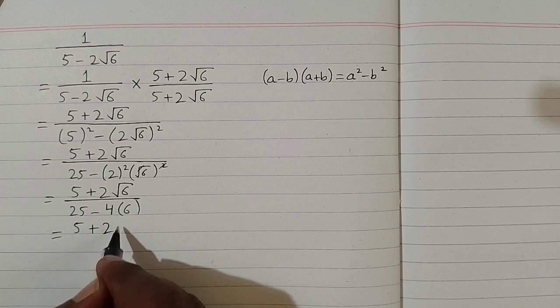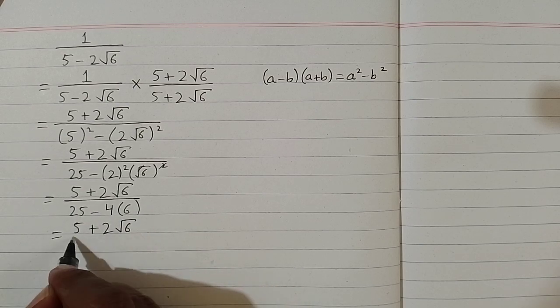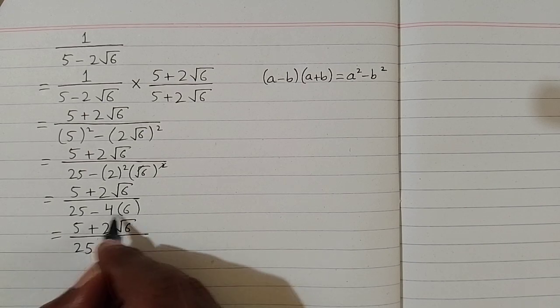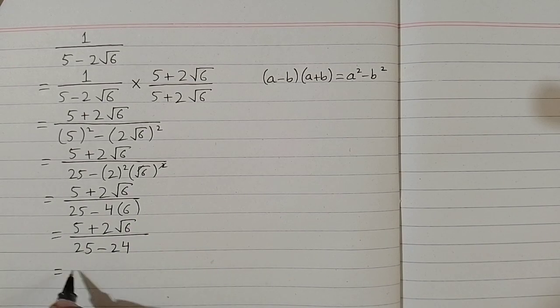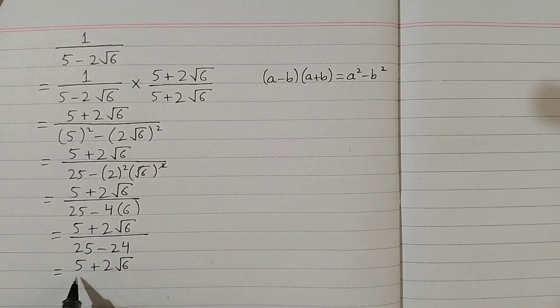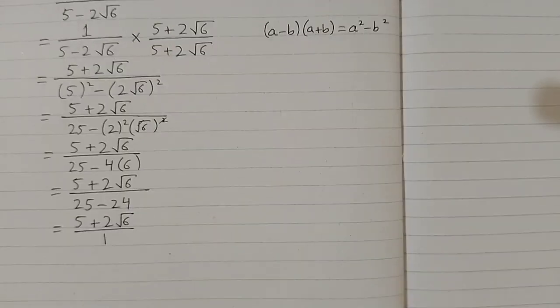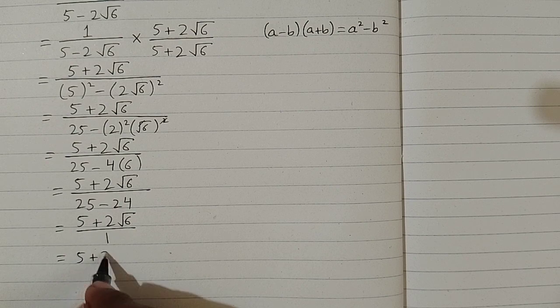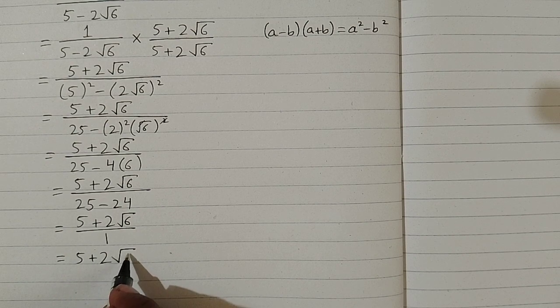Now 5 plus 2 square root of 6 upon 25 minus 4 times 6 is 24. And then we have 5 plus 2 times square root of 6 upon 25 minus 24 is 1. So the final answer is 5 plus 2 square root of 6.